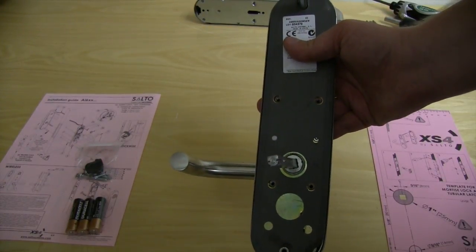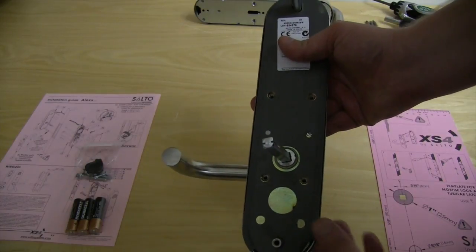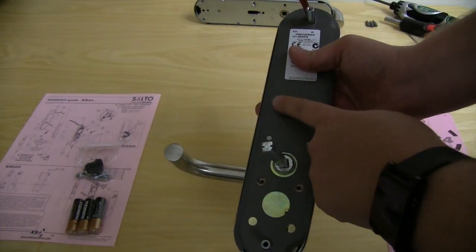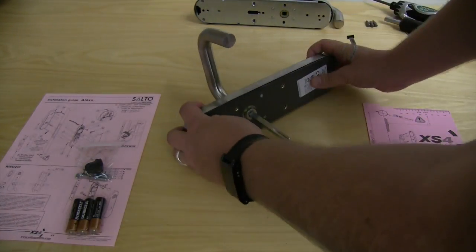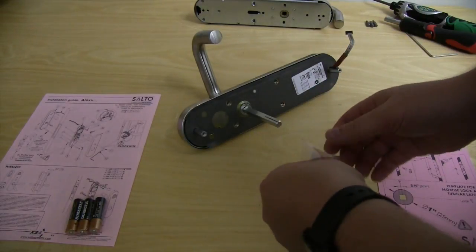This back panel is held to the front panel by four screws. You'll find those screws in this baggie.